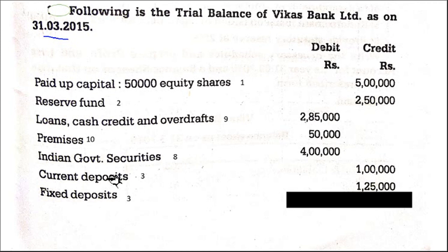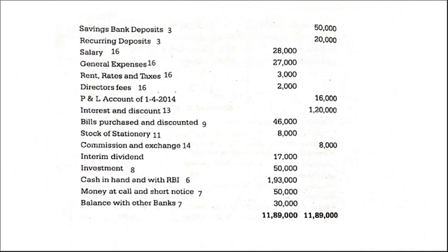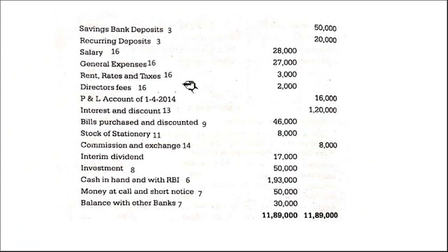Current deposits come under Schedule 3, deposits. Fixed deposits — again Schedule 3. Savings bank deposits, Schedule 3. Recurring deposits, Schedule 3. Salary — where does it appear? Operating expenses, Schedule 16. General expenses — Schedule 16. Rent, rates and taxes — Schedule 16.